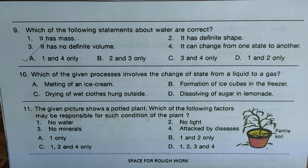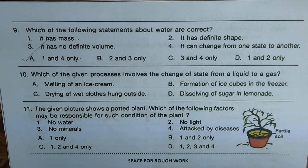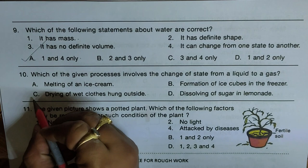Question ten: which of the given processes involves a change of state from liquid to gas? Option A — melting of an ice cream: no. Option B — formation of ice cream in the freezer: no. Option C — drying up wet clothes hung outside: yes, the water in the clothes evaporates due to sunlight and wind. Hence we mark C as the right answer.